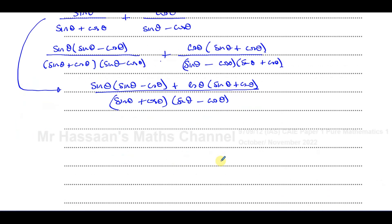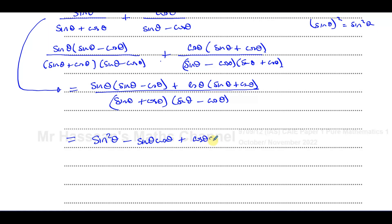Now I'm going to simplify the numerator. Sine θ times sine θ gives sine²θ. Then sine θ times −cosine θ gives −sine θ cosine θ. Then cosine θ times sine θ gives +sine θ cosine θ. And cosine θ times cosine θ gives cosine²θ. The denominator is (sine θ − cosine θ)(sine θ + cosine θ), which is like a difference of squares — when expanded, the middle term disappears and we're left with sine²θ − cosine²θ.